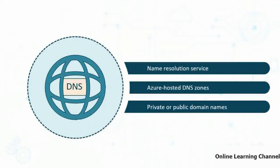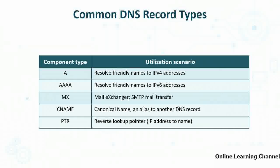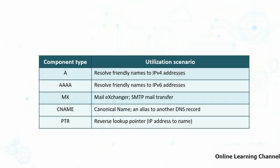You can host private or public domain names in Azure. DNS record types you can create in Azure DNS zones include: A records — resolving friendly names to IPv4 addresses; AAAA (quad-A) records for IPv6 addresses, which are four times longer than 32-bit IPv4 addresses; MX or Mail Exchanger records for SMTP mail transfer; CNAME or canonical name records, which are alias records pointing to another DNS record; and PTR or reverse lookup pointer records to resolve an IP address to a DNS name.